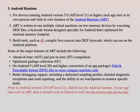Some major features of Android Runtime include: ahead-of-time and just-in-time compilation, optimized garbage collection, and on Android 9 (API level 28) and higher, conversion of app packages from Dalvik executable (DEX) format to more compact machine code. Additional features include better debugging support with a dedicated sampling profiler, detailed diagnostic exceptions and crash reporting, and the ability to set watch points to monitor specific fields.